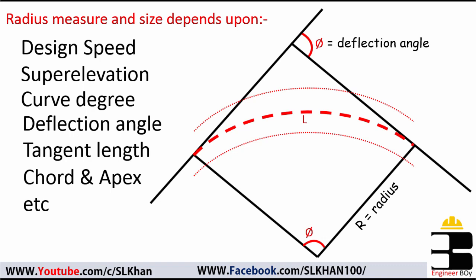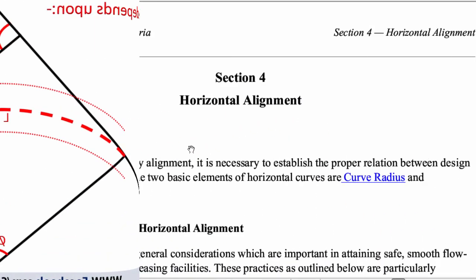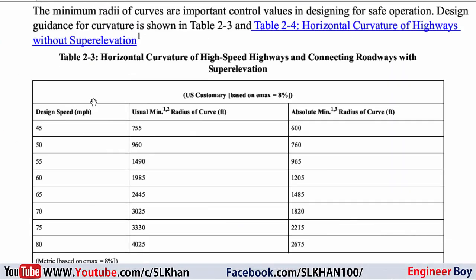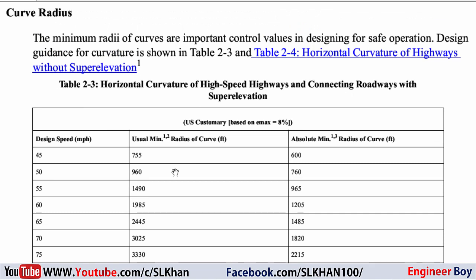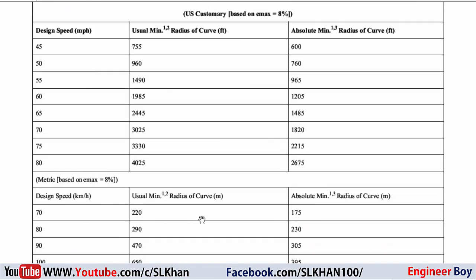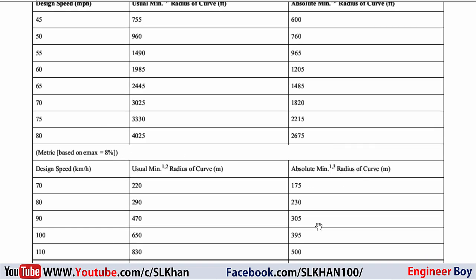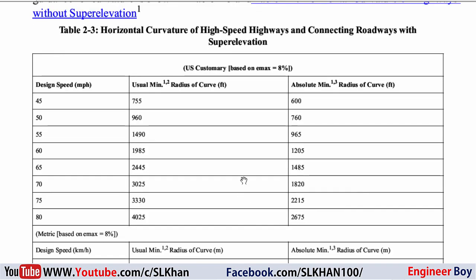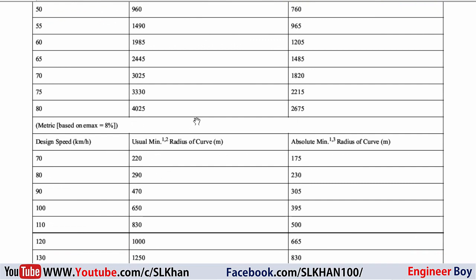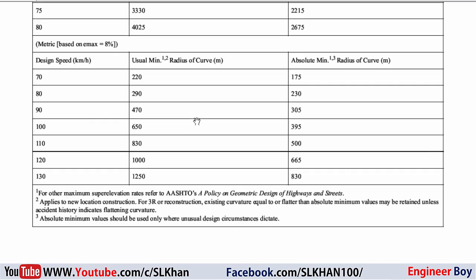In the basic design criteria, there are two tables. This table has the values for the radius of curve. One is in miles per hour and the other represents the metric system — design speed in kilometers per hour with radius values in meters. These tables are based on emax of 8% and reference AASHTO — the American Association of State Highway and Transportation Officials.